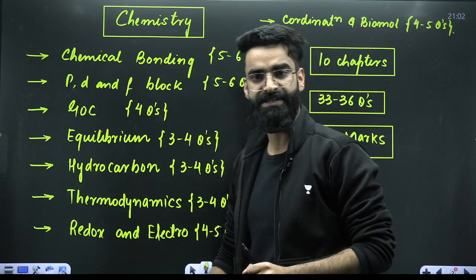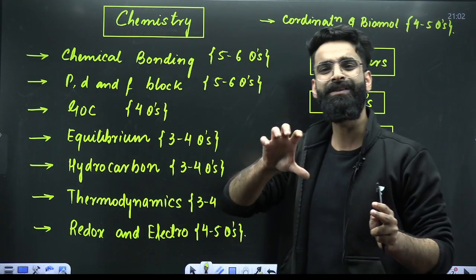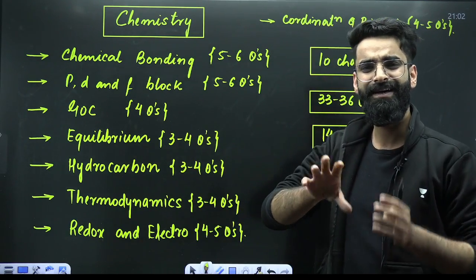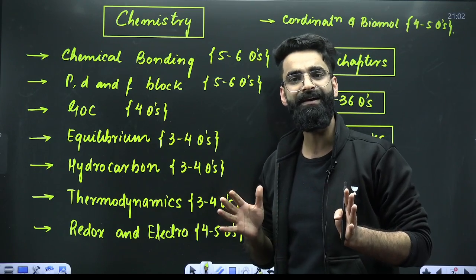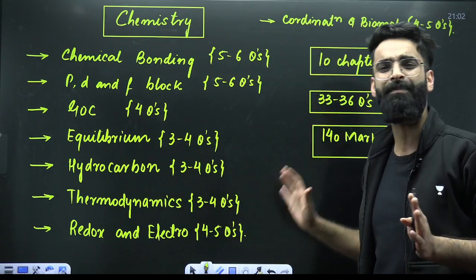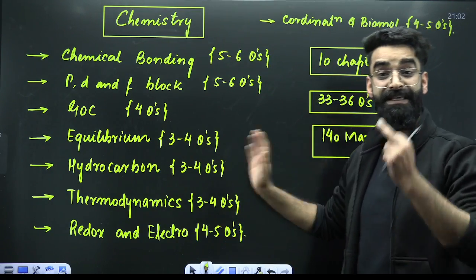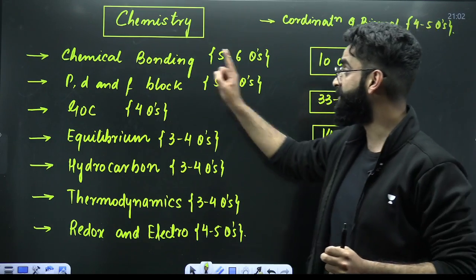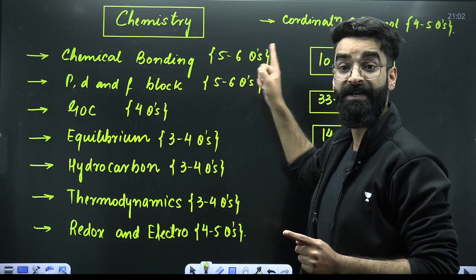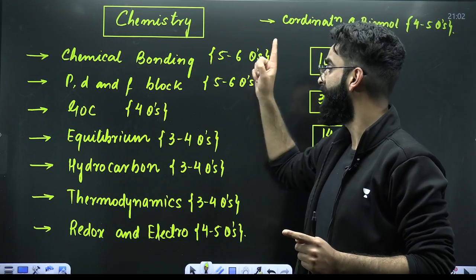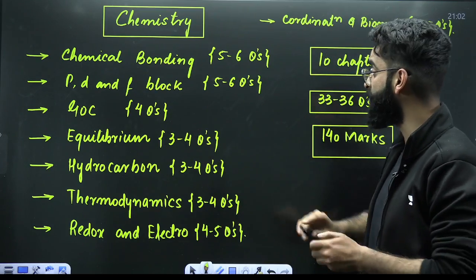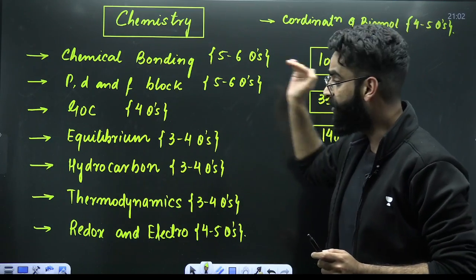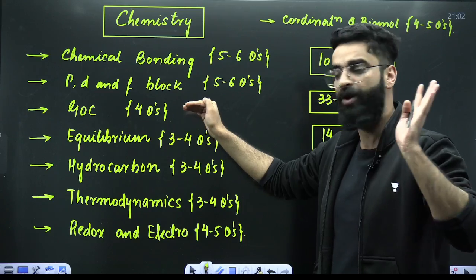Based on the reduction in syllabus, the difficulty level, etc., I have prepared a set of chapters. These are going to be your high-weighted chapters in chemistry. Starting with chemical bonding, you can expect 5 to 6 questions. Then P, D and F-block elements, 5 to 6 questions. General organic chemistry, for sure 4 questions.